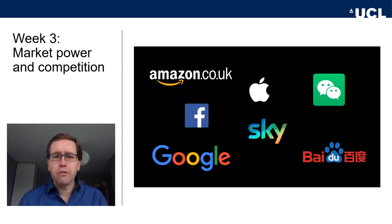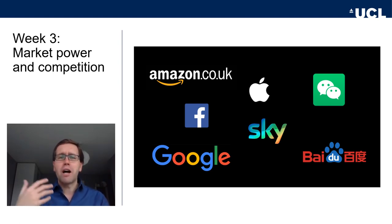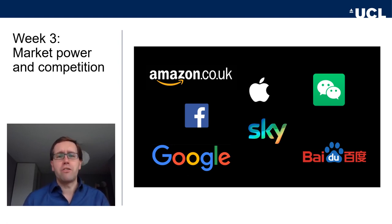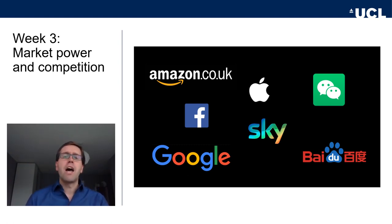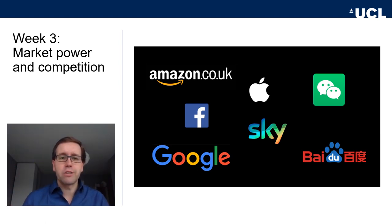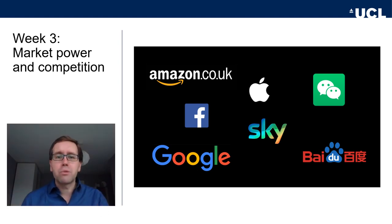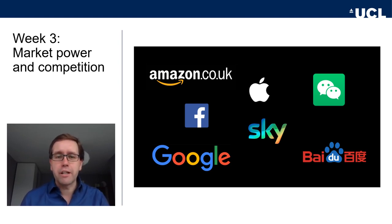That's quite different from the espresso market example we saw in the first week, where there were many sellers. Some espresso producers are better than others — I would rather go to Store Street or Fleet Cafe than to Starbucks or Costa — but in the end these are all pretty close substitutes. That means buyers and sellers of espresso are price takers: they have to accept the market price and can't charge twice as much, or else they wouldn't have any consumers.